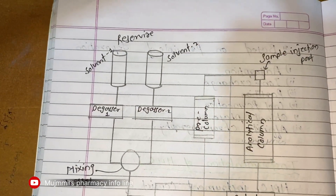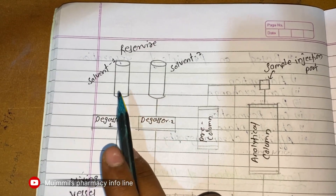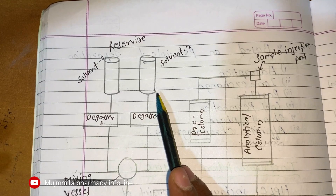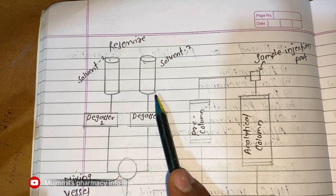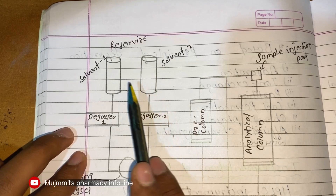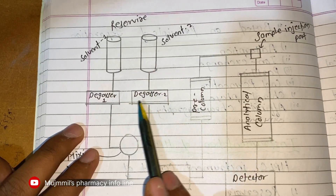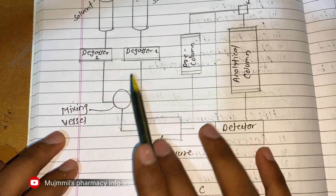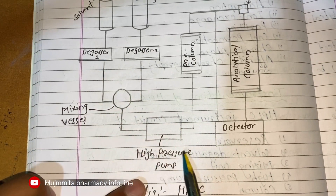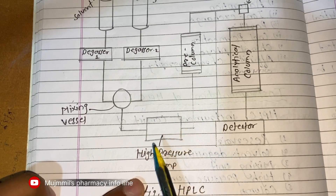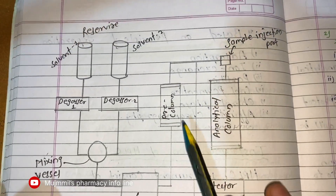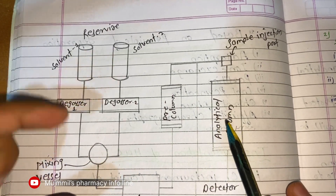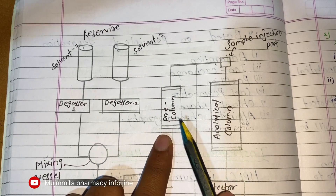Looking at the diagram of HPLC: two solvent reservoirs can be used — in fact two or four solvent reservoirs depending on the instrumentation. After the solvent reservoir, there are two degasser units, then a mixing vessel attached to the degassing unit. From the mixing vessel, a high pressure pump is attached for pumping the mobile phase into the column. There is a pre-column, which is smaller compared to the analytical column.